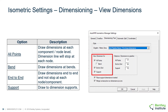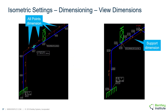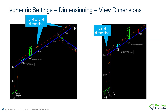You can draw dimensions at all points, at each component and point level, where the dimension line would stop at each node. You can choose bends, which would draw dimensions at bends. You can choose end to end, which would draw dimensions end to end and not stop at each node or component. Or you can select supports, which would draw dimensions to supports. More than one of these can be selected at a time. Examples show all points on the left, the support option on the right, end to end dimensioning on the left, and the bend dimension option on the right.